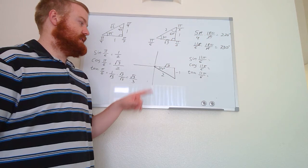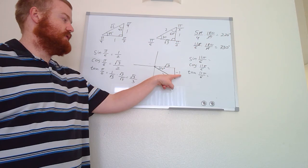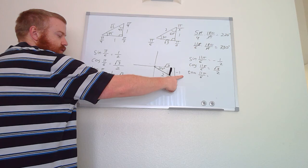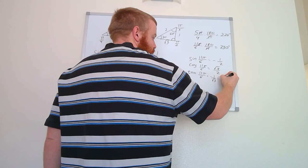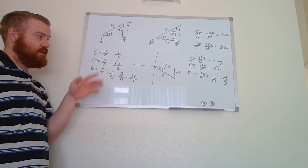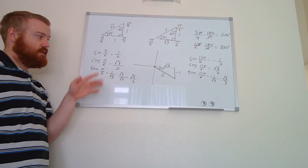So: sine(11π/6) = opposite/hypotenuse = −1/2; cosine(11π/6) = adjacent/hypotenuse = √3/2; tangent(11π/6) = opposite/adjacent = −1/√3 = −√3/3. We get the same numbers as the base π/6 values, just some are negative.